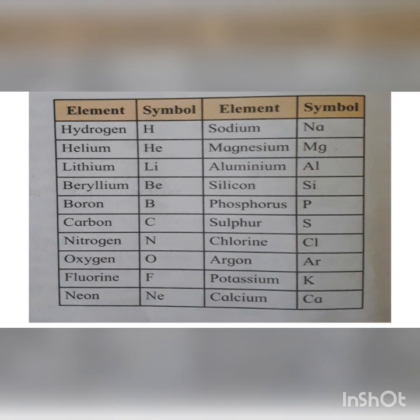Continuing: Magnesium — Mg; Aluminium — Al; Silicon — Si; Phosphorus — P; Sulphur — S; Chlorine — Cl. Note that chlorine is not Ch but Cl. Argon — Ar.